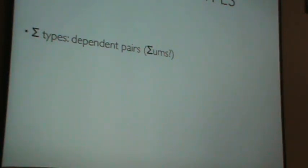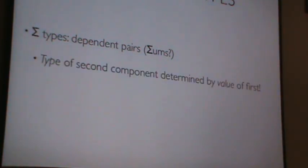The first one is called a sigma type. People often call them dependent pairs or sums, which is what I consider to be a bad name. That's where the sigma comes from, or sum.